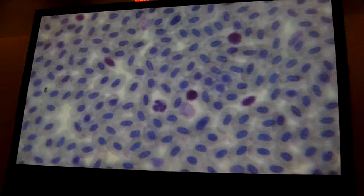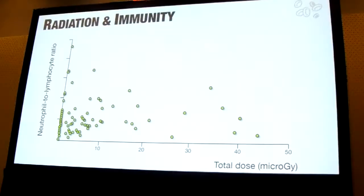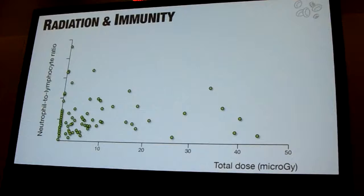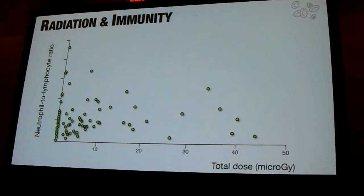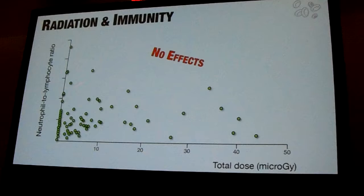We have also been looking at immune levels, because one of the ideas is that individuals living in highly contaminated environments may have lower immune levels, which could explain why they appear fine but might be more susceptible to pathogens. We looked at the neutrophil-to-lymphocyte ratio, which is a common standard for assessing immune levels of individuals, and once again we haven't found anything. There's no clear relationship between radiation levels and the neutrophil-to-lymphocyte ratio — no effect at the immunological level.